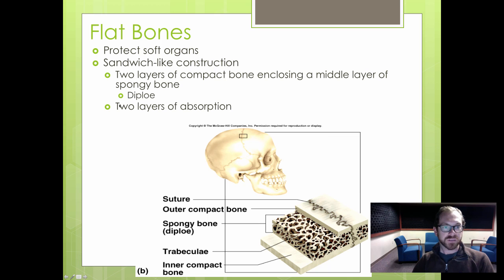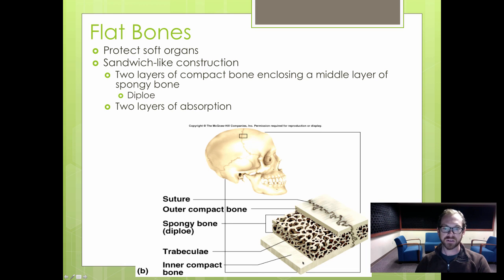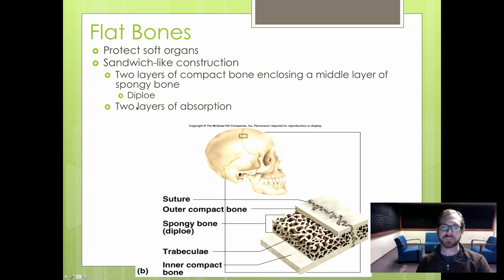Flat bones are typically used to protect soft organs. They are sandwich-like in construction, with two layers of compact bone on the outside and spongy bone in the interior, which helps absorb shock or blows.